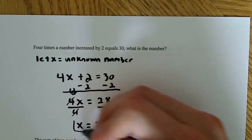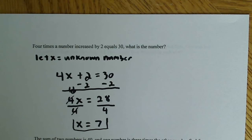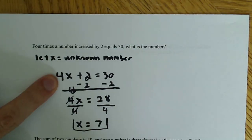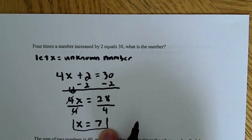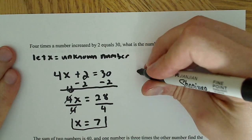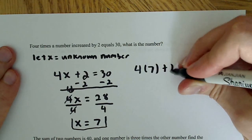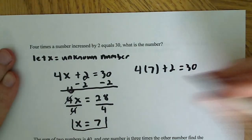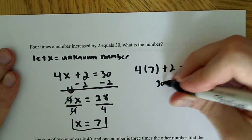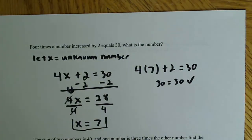The cool thing about algebra, or any math for that matter, is that you can always check your answer to see if it's correct. All we have to do is plug this number into x and see if it equals 30. So 4 times 7 plus 2 equals 30. 4 times 7 is 28, plus 2 is 30. So 30 equals 30, and the answer is correct.